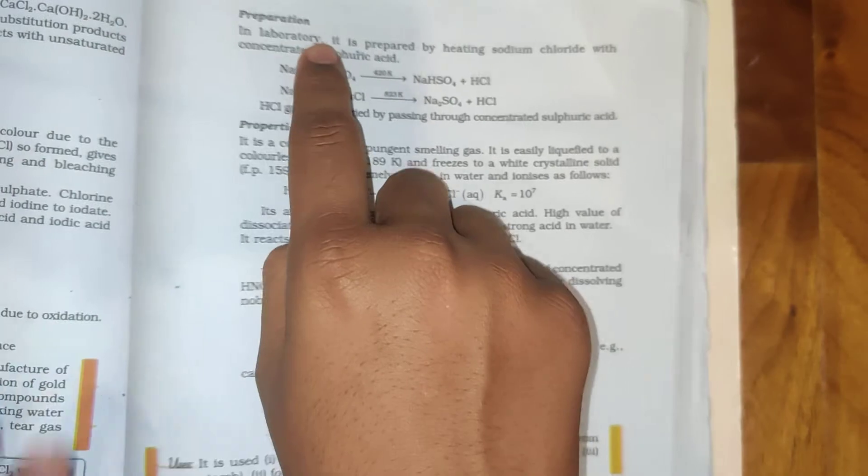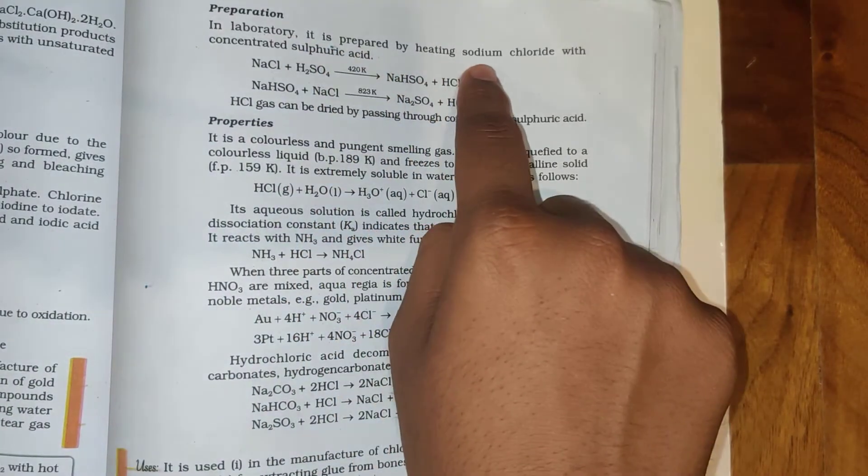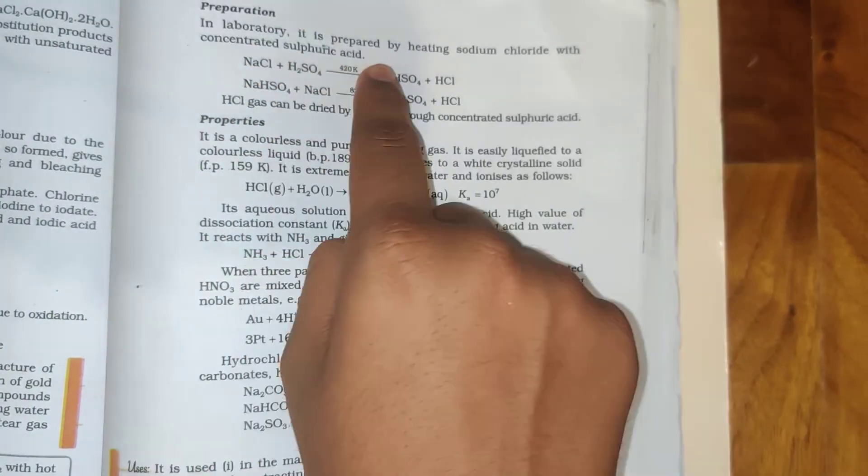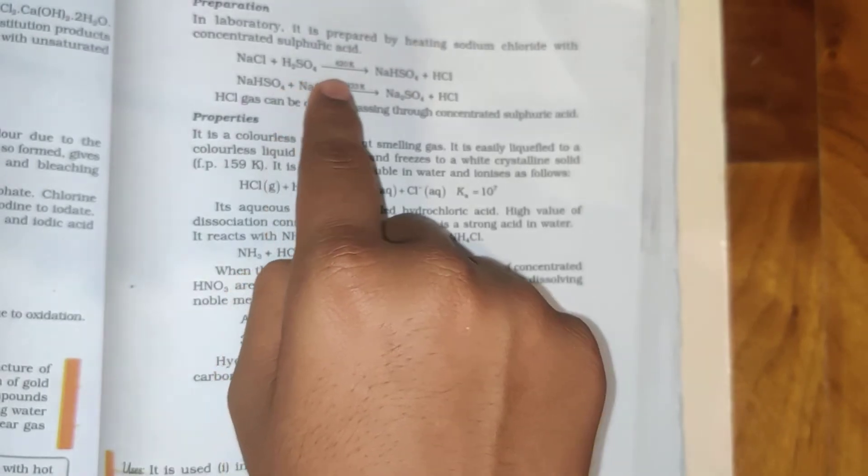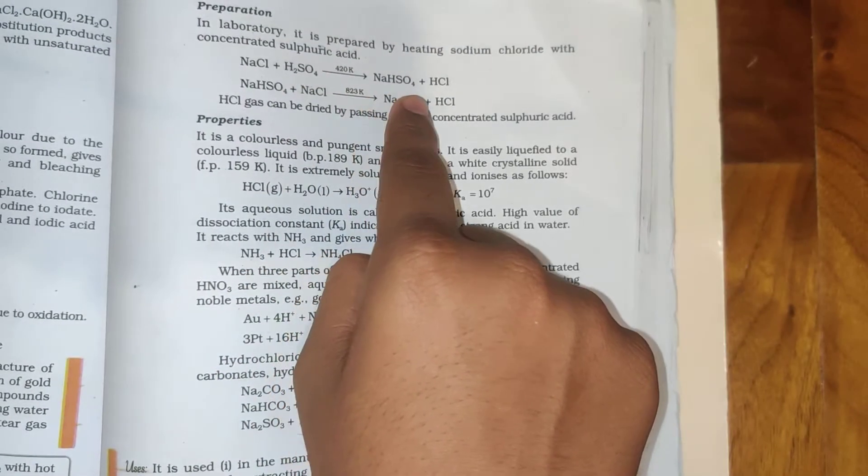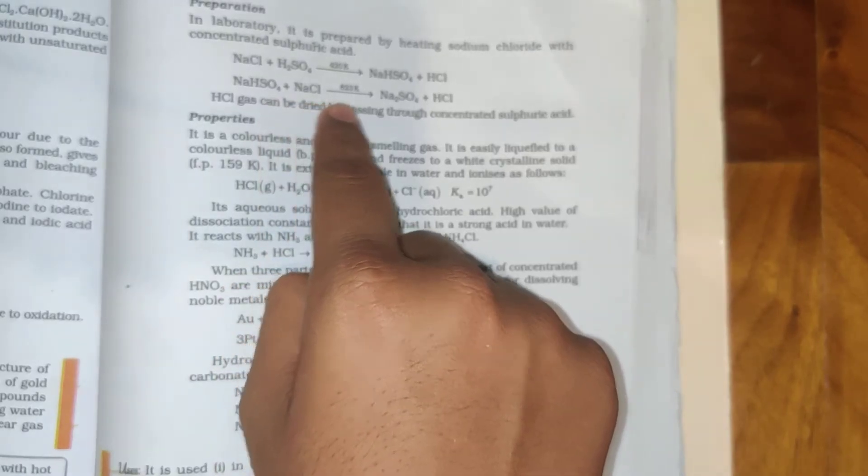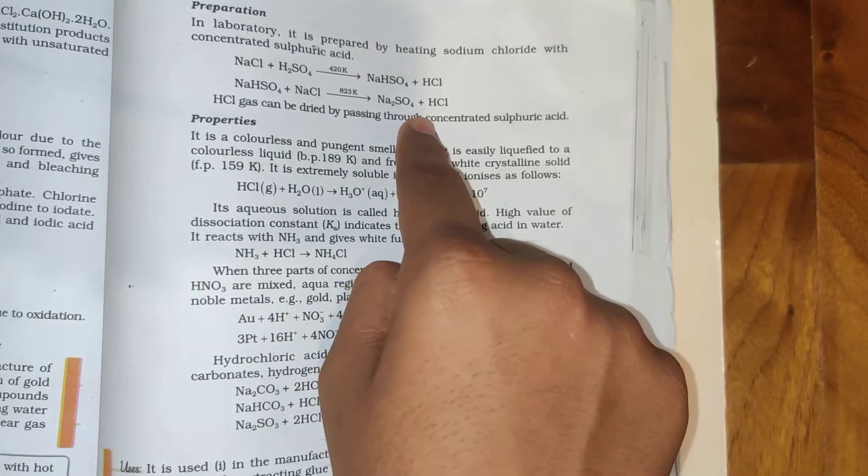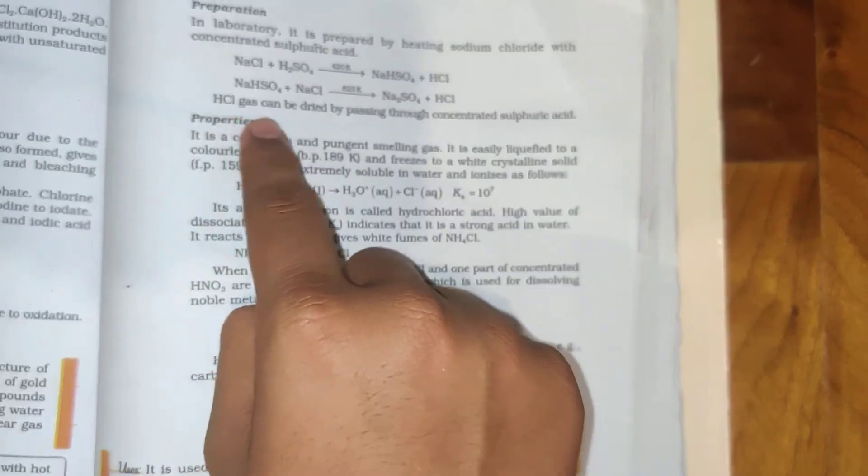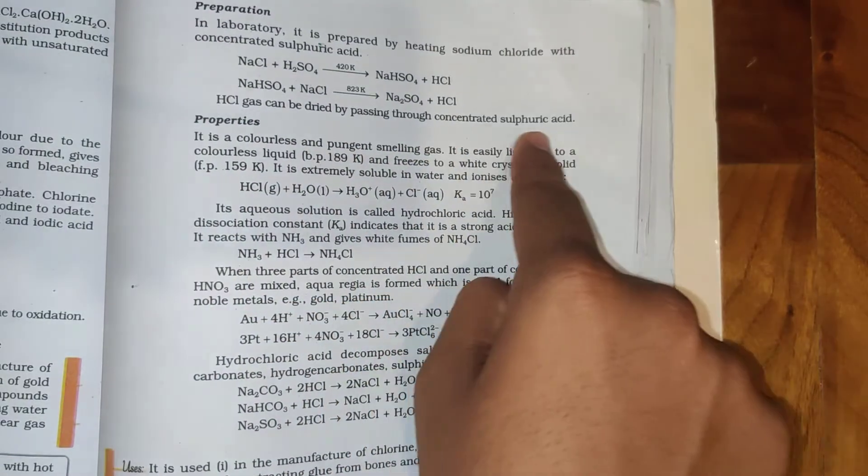Preparation: In laboratory, it is prepared by heating sodium chloride with concentrated sulfuric acid. NaCl plus H2SO4 when heated at 420K gives NaHSO4 plus HCl. NaHSO4 plus NaCl when heated at 823K gives Na2SO4 plus HCl. HCl gas can be dried by passing through concentrated sulfuric acid.